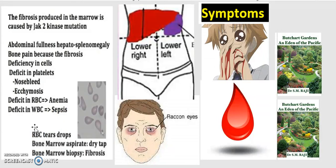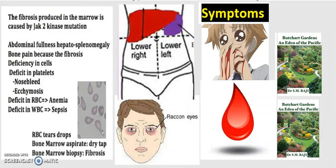An important finding is that while there are generally normal blood cells, you will also find cells that look like teardrops in the bloodstream. If teardrop-shaped red blood cells are observed, this is a hallmark sign of primary myelofibrosis. The bone marrow is dry, which can be confirmed using a procedure called a dry tap to determine if the bone marrow is physically dry.